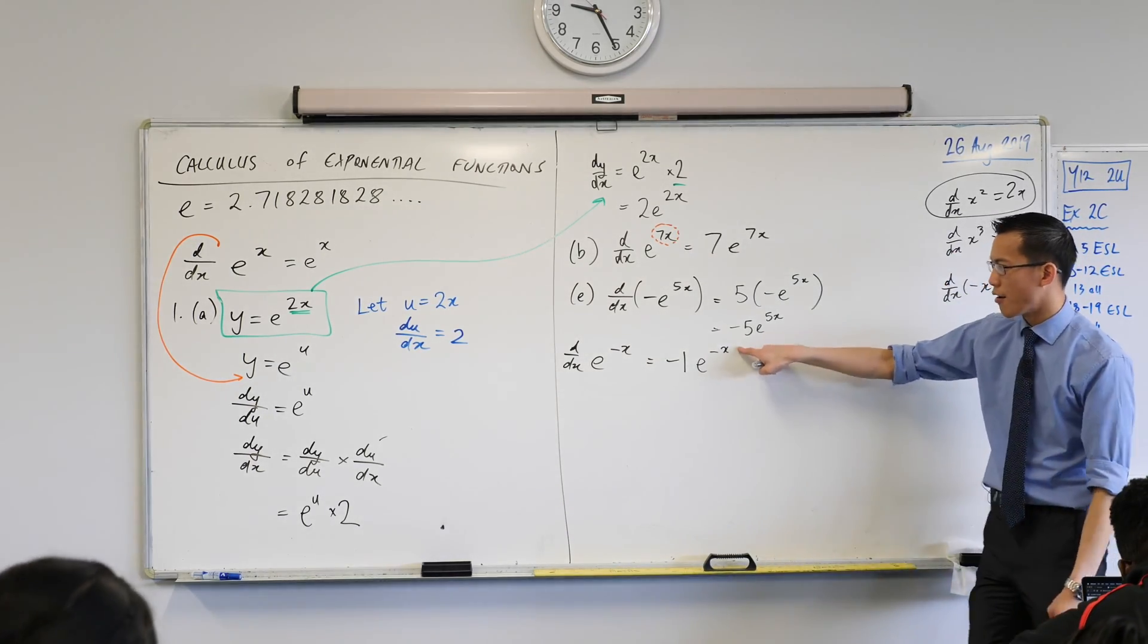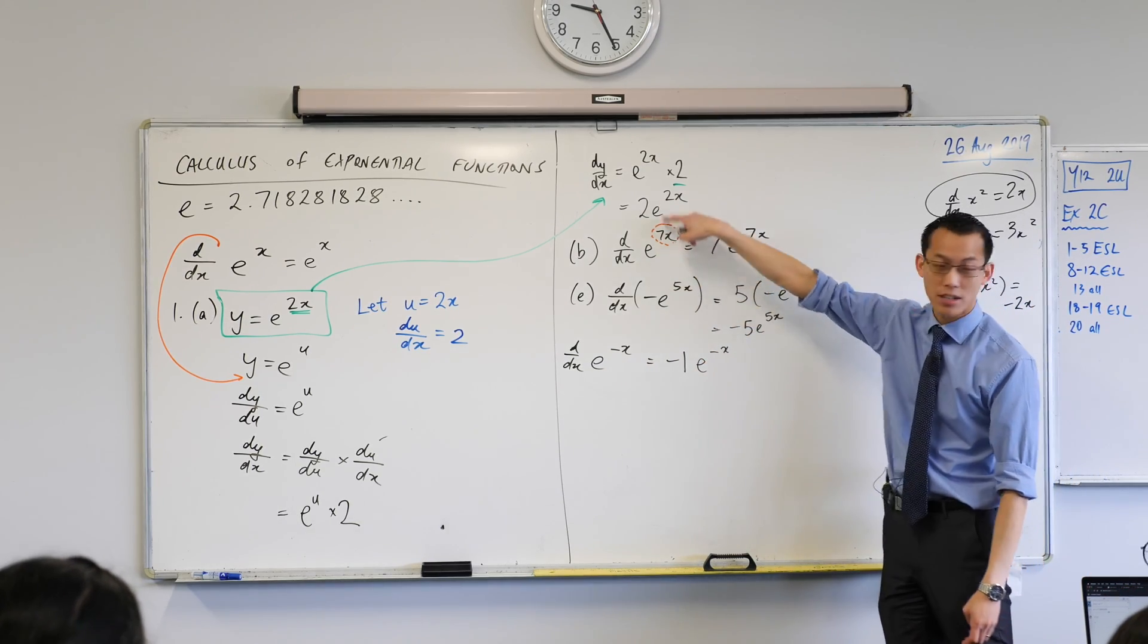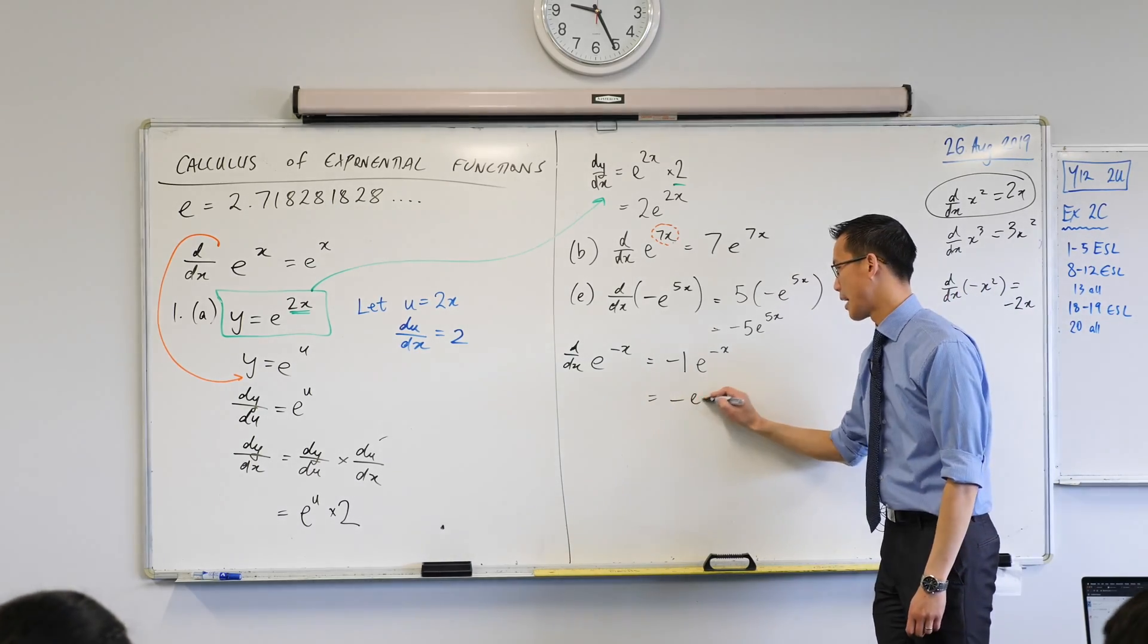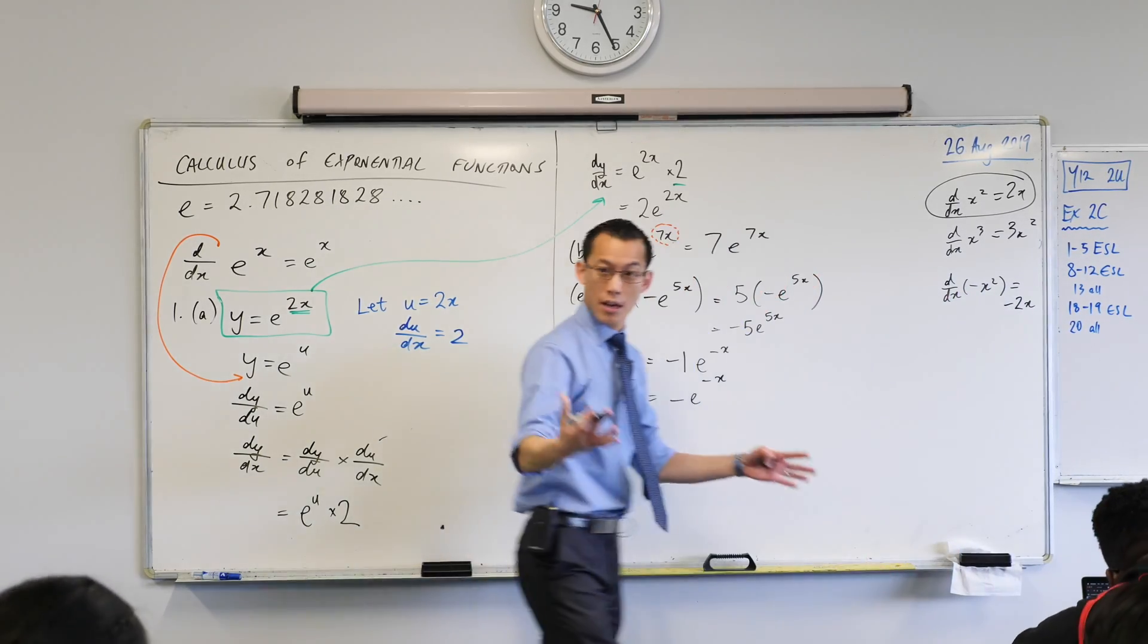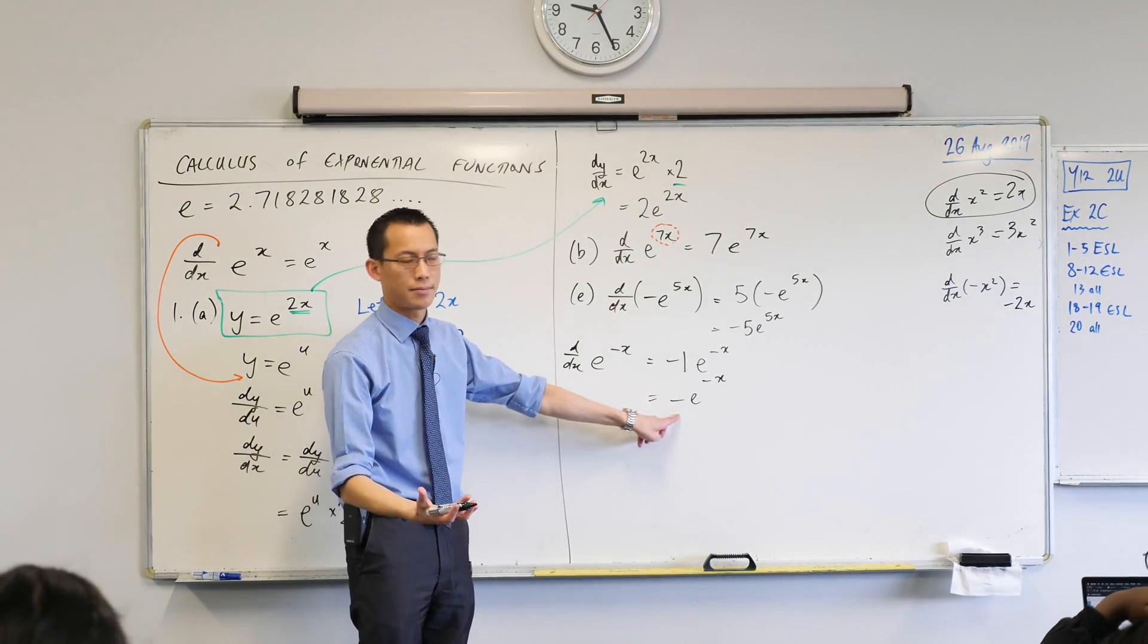And please notice that by the way. It is e to the power of whatever was there before. Whether it's a minus x or a 5x or a 7x or a 2x. That sort of carries along. So I'll just tidy that up like so. And you can see the reason why we're down below the x axis as we'll point out is because of that minus sign out the front.